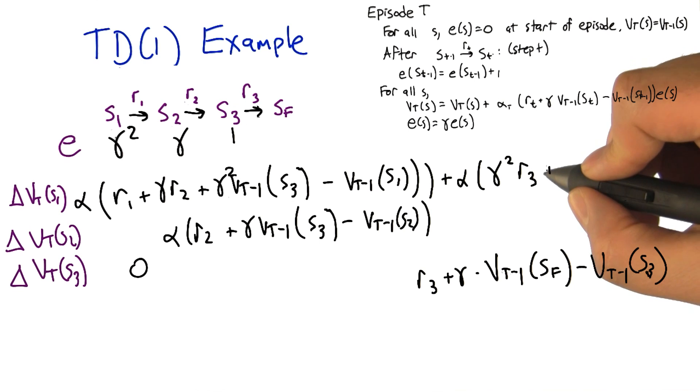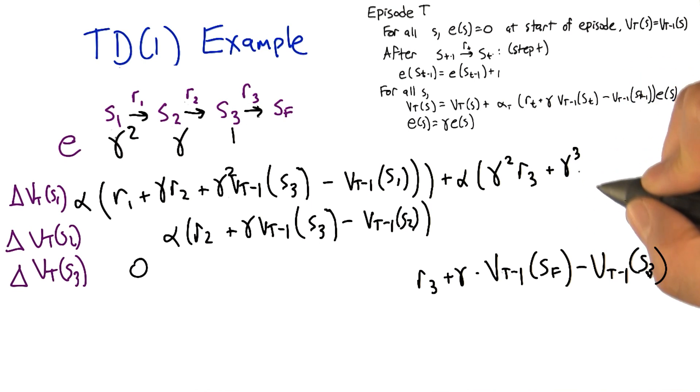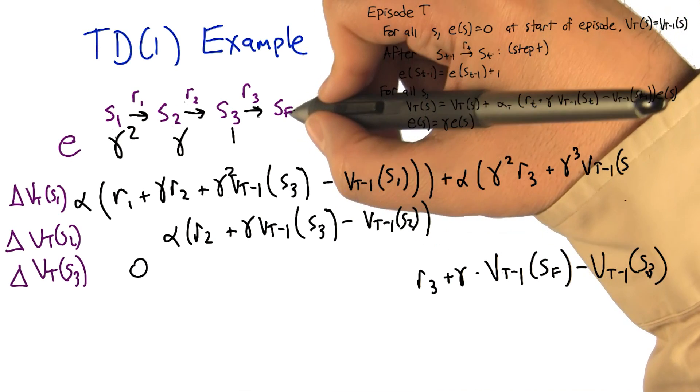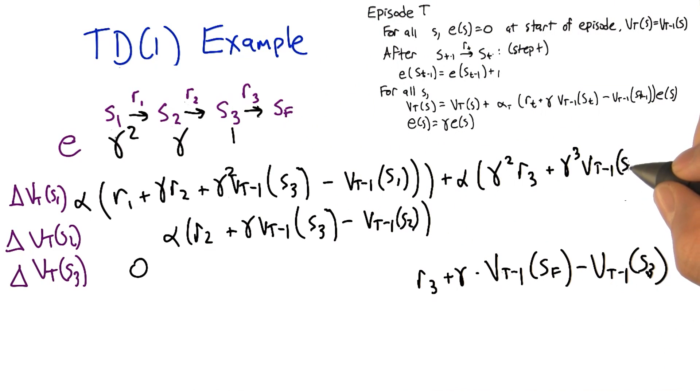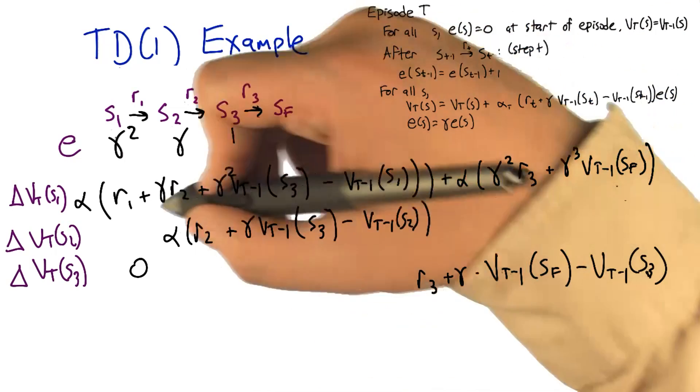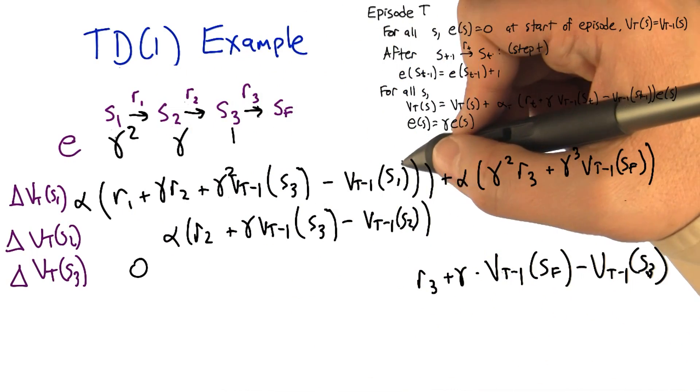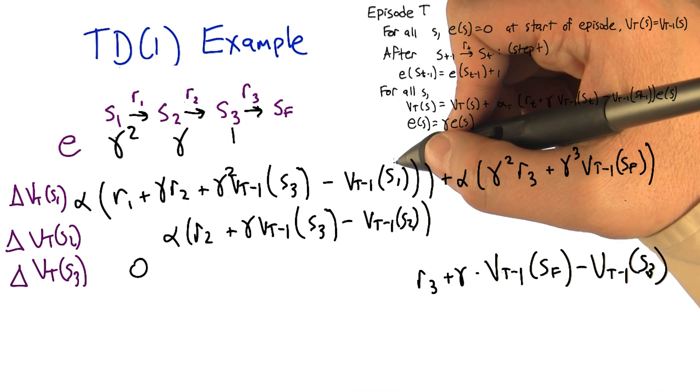Plus gamma cubed of vt minus 1 of sf. Minus vt minus 1 of s1, so that stays. And all that is is the error. It's what your guess was of the value and what you actually ended up seeing, which was all the rewards that you saw plus whatever future value there's going to be. Good.